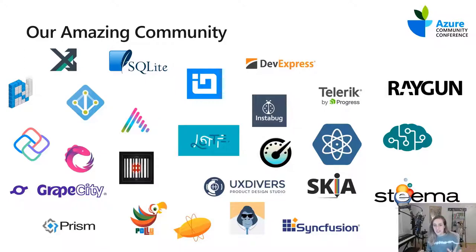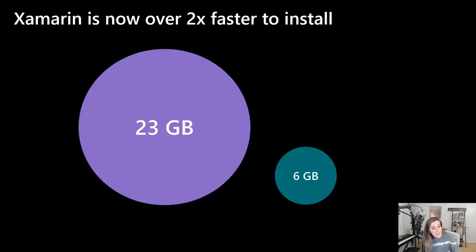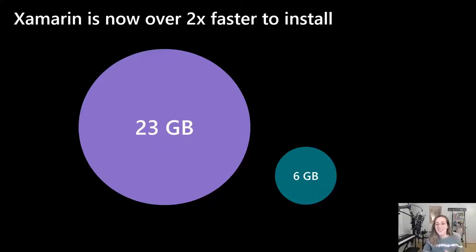We want to make it as easy as possible for new developers to come into our ecosystem. Xamarin is just a checkbox in the Visual Studio installer — and it's over twice as fast to install and almost a quarter of the size it used to be, around five or six gigs. Check the box, Visual Studio installs everything you need, including the Android SDK. You can develop without a Mac for iPhone using Hot Restart. While watching this talk, you can open Visual Studio installer, hit modify, check off Xamarin, and be on your way.